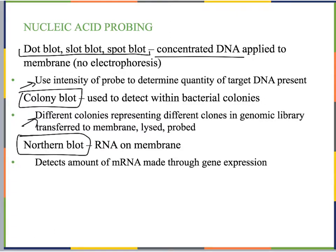The Northern blot is related to RNA — the other blots we spoke about were DNA-related. In a Northern blot, RNA is applied to a membrane to detect the amount of mRNA made through gene expression. Similar to a cDNA library, we want to know what a cell is expressing rather than what its DNA includes. For example, we can compare a stressed cell to an unstressed cell and see what particular mRNAs are produced by those different conditions.